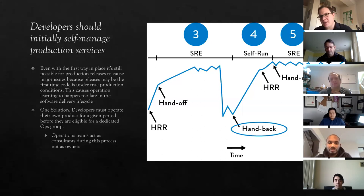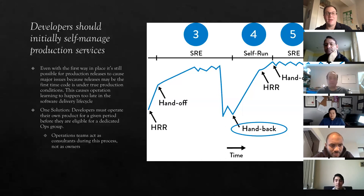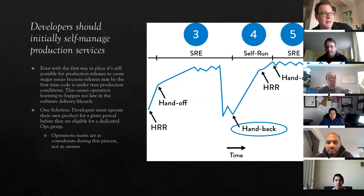The underlying principle that almost every organization with operations and development teams can apply is just to have developers run what they build. This runs really counter to what most developers want to do — they absolutely hate running what they own. But that's a great way to make sure that developers make those processes as easy to use as possible, if they have to share that pain. The more people are incentivized by the same things, the more likely they're going to start solving each other's problems.